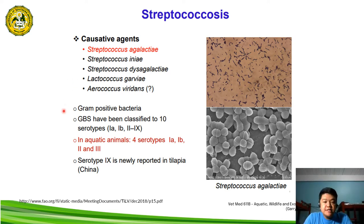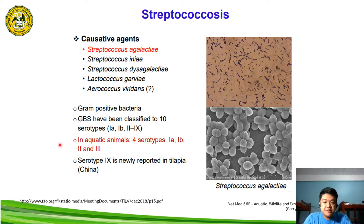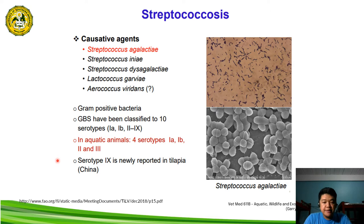This pathogen is a gram-positive bacteria. For Streptococcus agalactiae, there are four serotypes: 1A, 1B, 2, and 3. There is also a newly reported serotype in China, which is serotype 9.